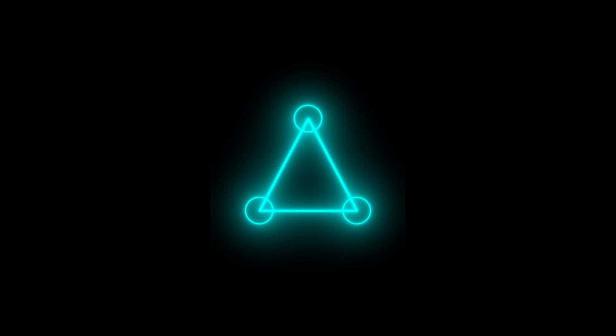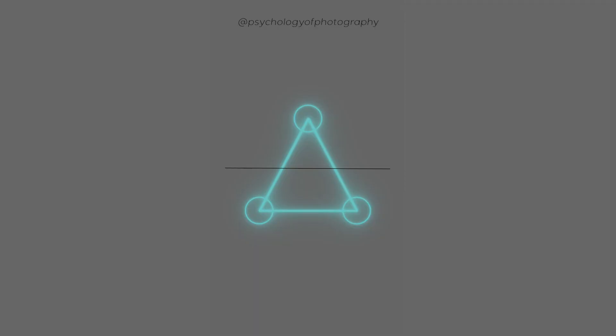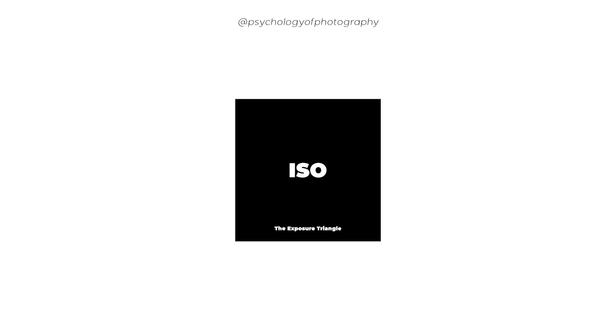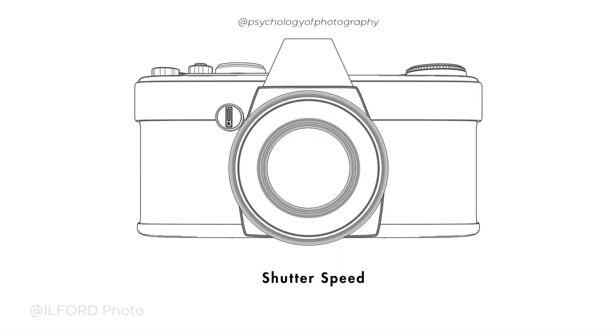But in low light situations, you may need to use a higher ISO value to get a properly exposed image. In conclusion, ISO is an important element of the exposure triangle and it plays a crucial role in determining the final image. We move on to the second corner of the exposure triangle: shutter speed.